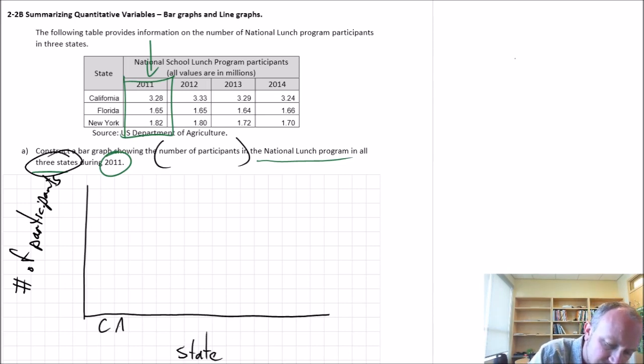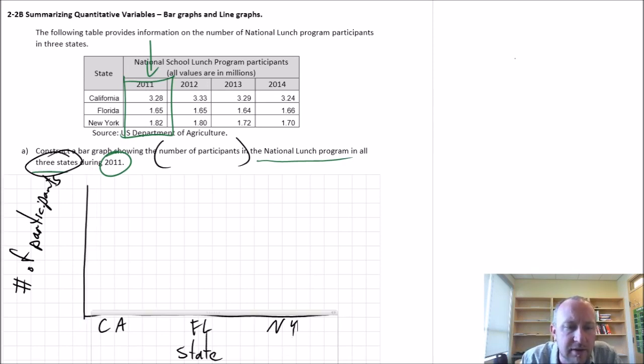So this is the states. And here I have California, Florida, and New York. So I've got all of my labels. Now we can go ahead and add the data.